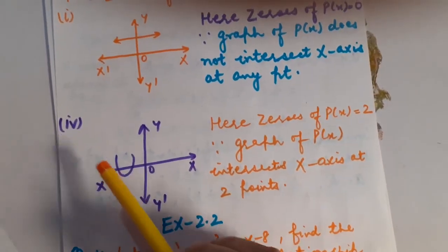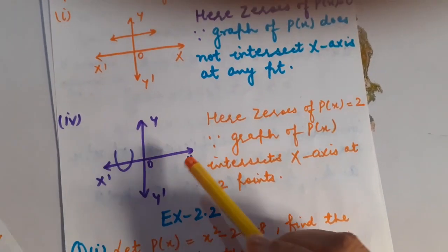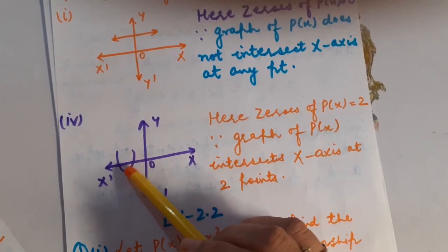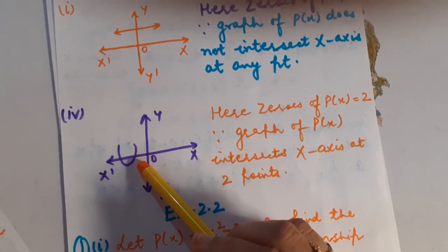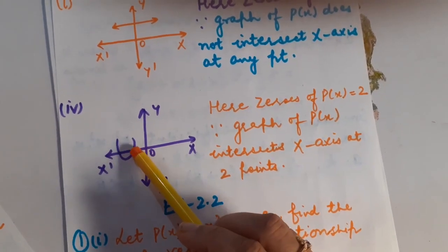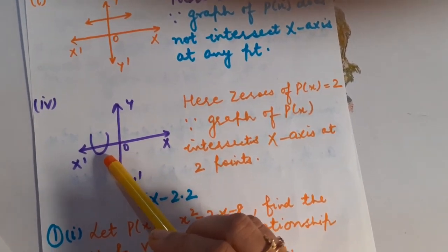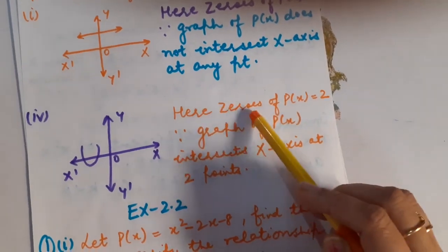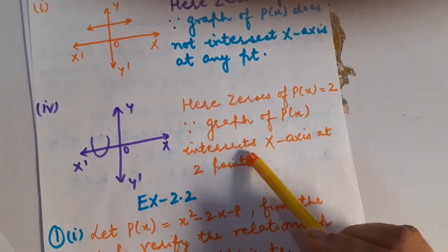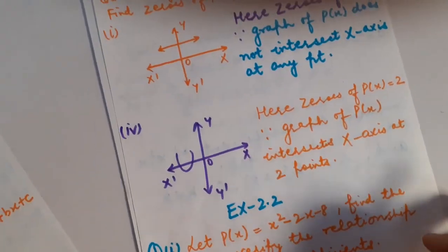I have taken one more question based on the same concept. Here, you can see that this is a graph of a parabola — so we are dealing with a quadratic polynomial. It is going to intersect the x-axis at two points, so how many zeros does it have? Two. The zeros of the polynomial P(x) is 2 because the graph of P(x) intersects the x-axis at two points.